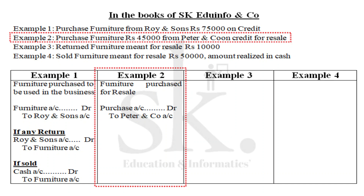Example two: purchase furniture for Rs. 45,000 from Peter and Co. on credit for resale. The word 'resale' clearly indicates this furniture is part of goods. So the entry is Purchase Account Debit, Peter and Co. Account Credited. Comparing with Example 1 — in Example 1 we debited furniture account on purchase, but in Example 2 for resale we debit purchase account instead.